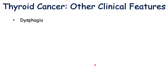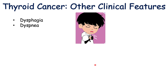Other clinical features include dysphagia or difficulty swallowing, which occurs when the thyroid mass starts to push on the esophagus. There can also be dyspnea or shortness of breath, which could be due to the thyroid mass growing and pushing against the trachea. This is seen more commonly in anaplastic thyroid carcinoma.